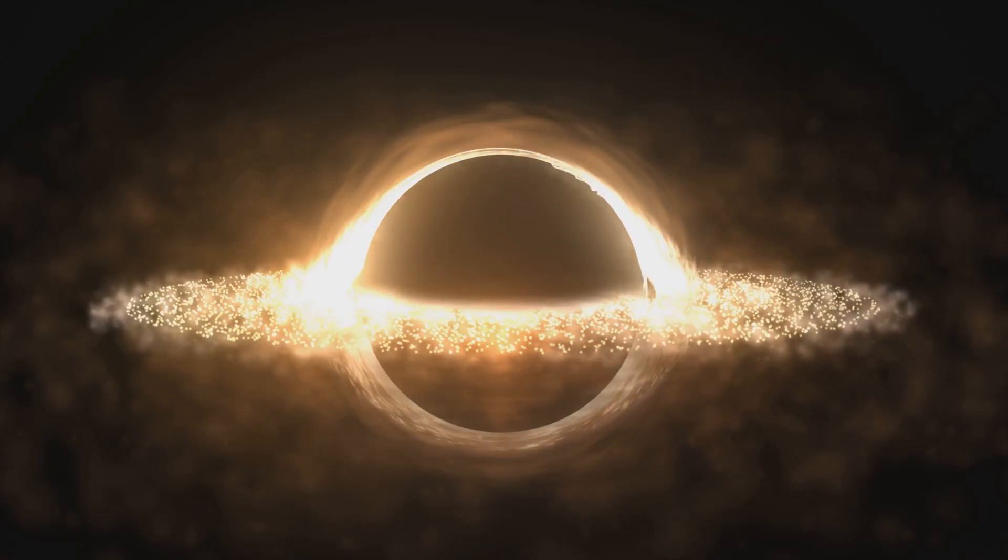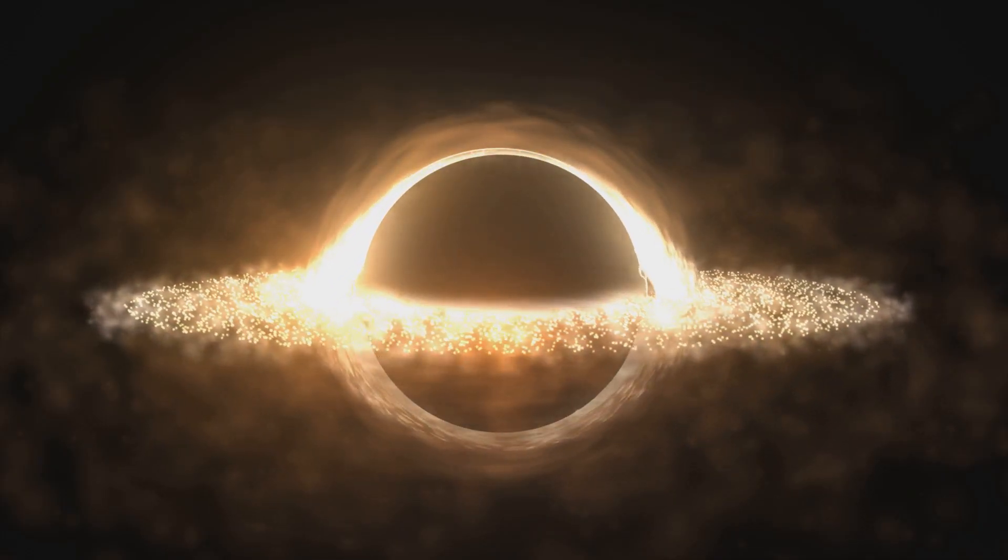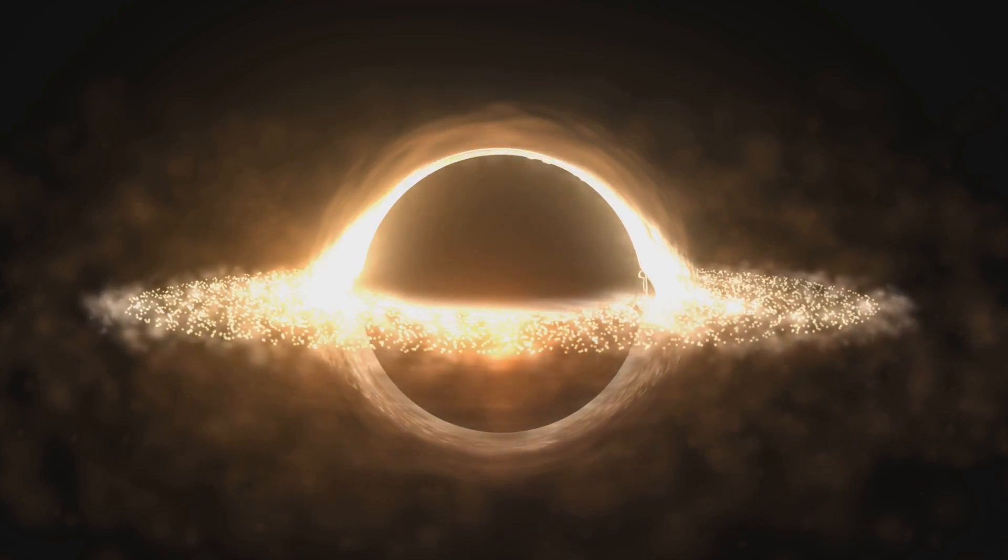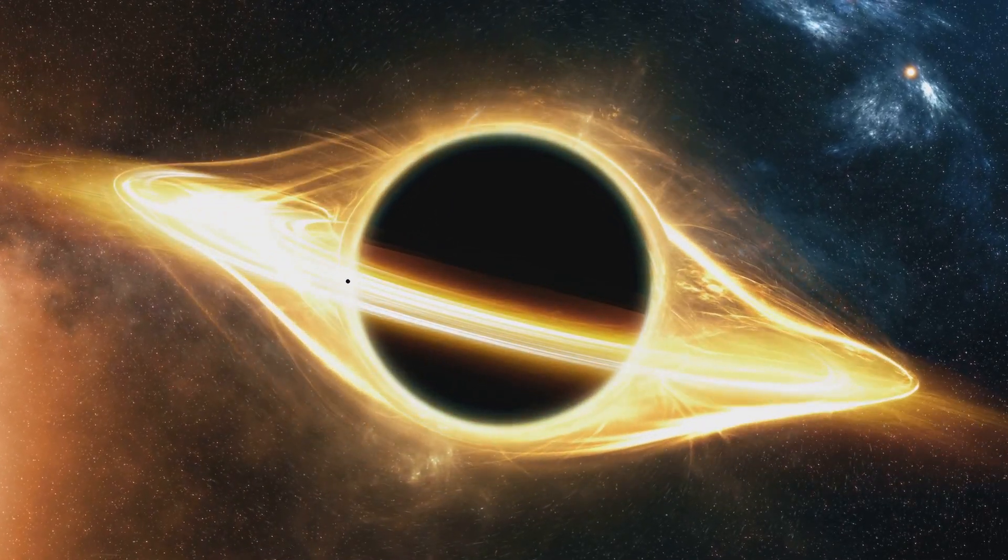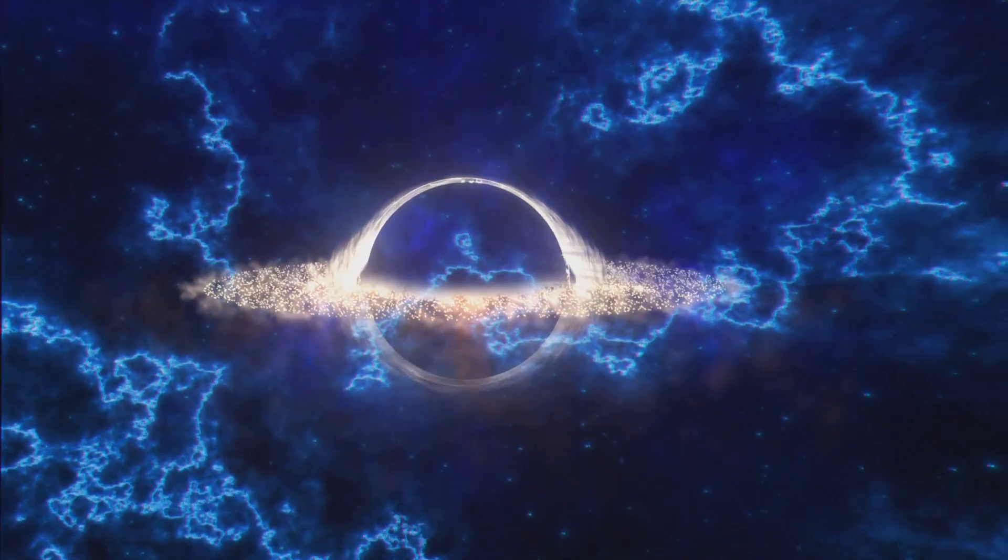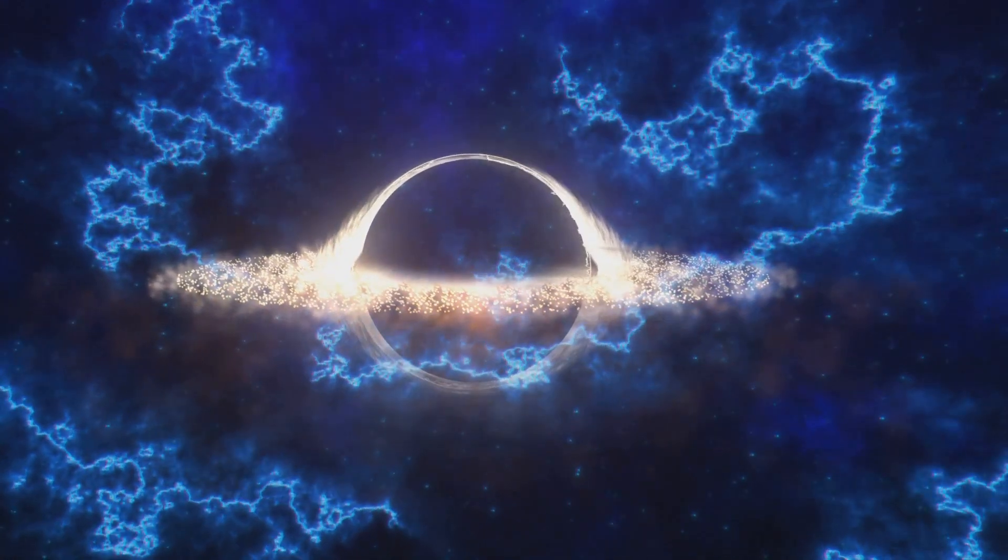One intriguing possibility stems from the concept of rotating black holes. Unlike their non-rotating counterparts, rotating black holes possess a region known as the ergosphere, a region outside the event horizon of space-time itself is dragged along with the black hole's rotation. Within the ergosphere, objects are inevitably caught in this swirling dance, forced to move in the direction of the black hole's rotation.